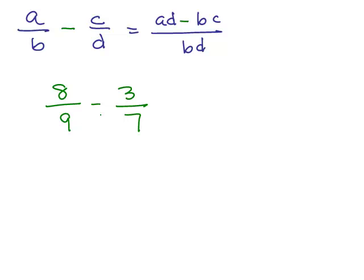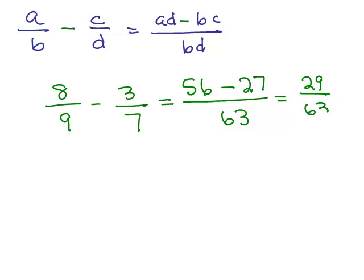So here's an example, 8 ninths minus 3 sevenths. So first we begin by multiplying the denominators together. Nine times 7 is 63. And since it's a subtraction problem, we put a minus sign above it. So you have 8 times 7 is 56 minus 9 times 3 is 27. And then we have to subtract. So we get 29 over 63. That's reduced since 29 is prime and doesn't go into 63. So there's our answer.